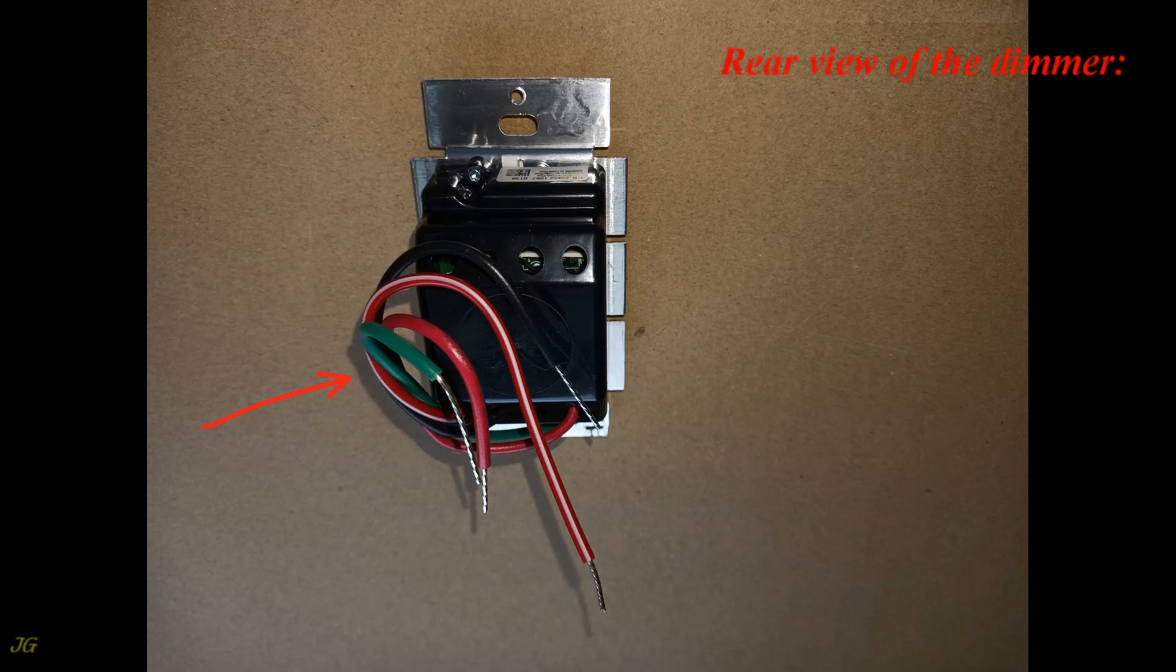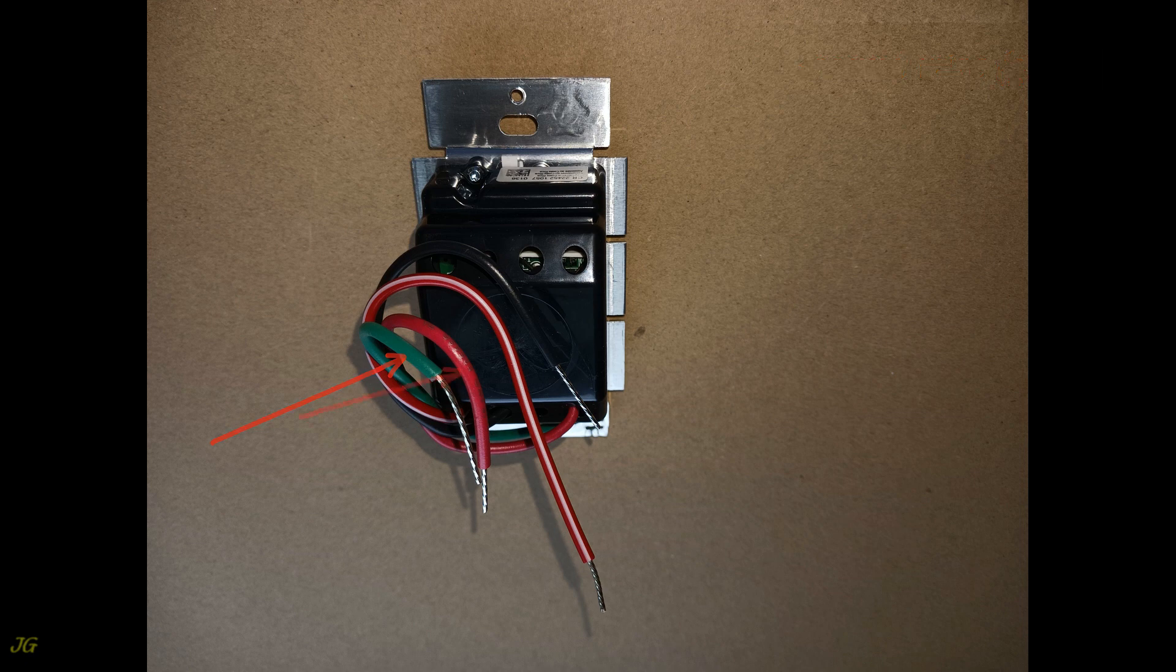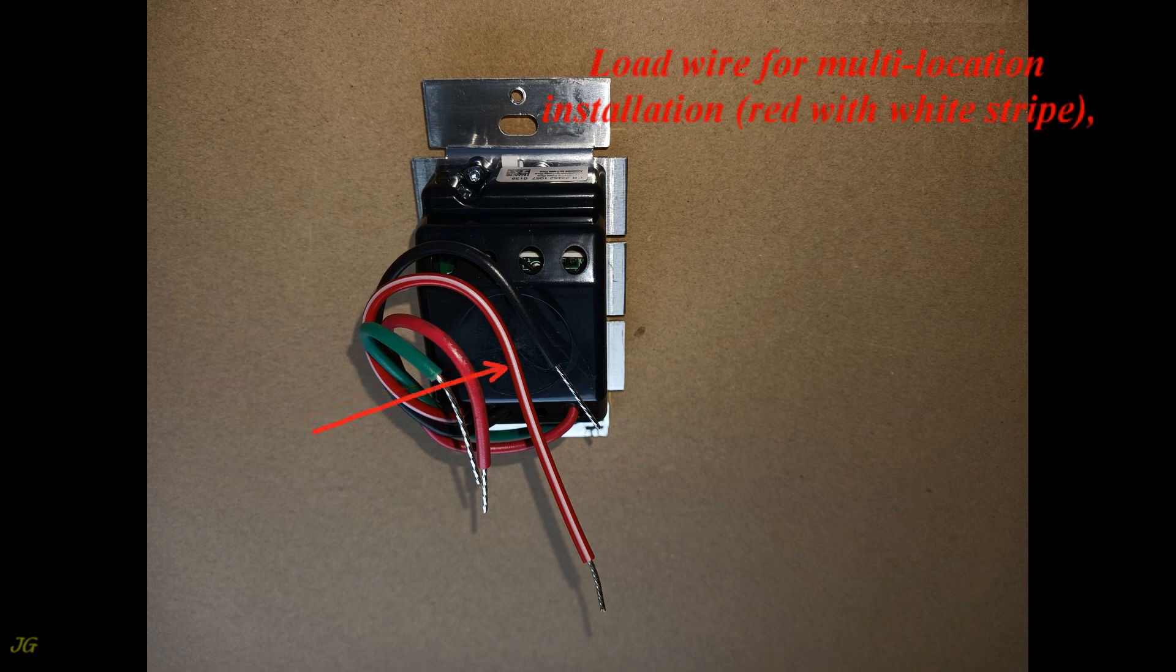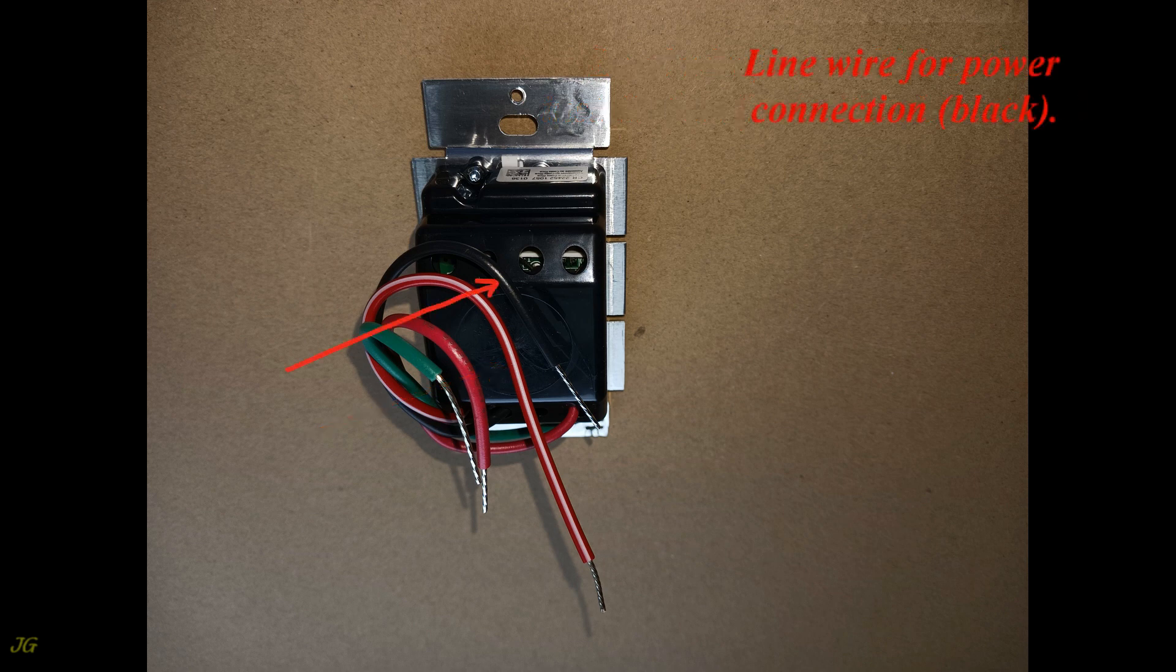Rear view of the dimmer: ground wire (green), load wire for single pole switch wiring or load wire for multi-location installation (red with white stripe), and line wire for power connection (black).